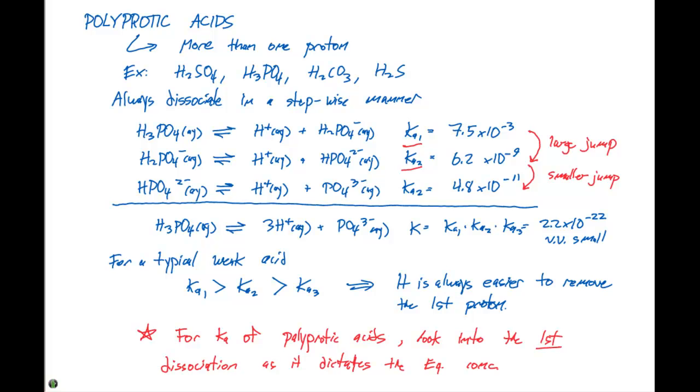Because if we have a very small K, it's gonna highly favor the reactants, and those reactants don't go forward very well. We can just look into the first dissociation constant, which will dictate our equilibrium concentration of our H+ and which will also dictate the pH for a particular solution that has a polyprotic acid.